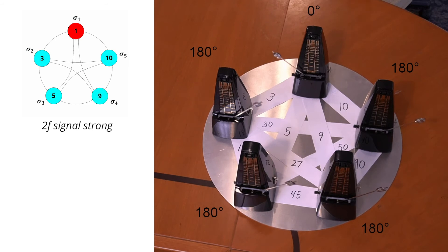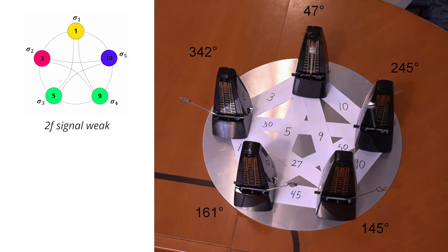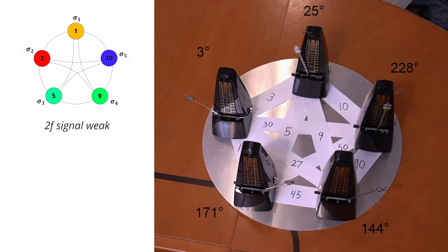Let's illustrate what can happen if the sub-harmonic injection-locking signal is too strong. Running the simulation again, we get a solution, but the solution is wrong — the system did not have time to evolve to the right answer because the injection-locking signal is too strong. Now let's see what happens if the injection-locking signal is too weak. In this case, the metronomes end up neither in-phase nor out-of-phase with one another, so it's impossible to know which number is in which partition.